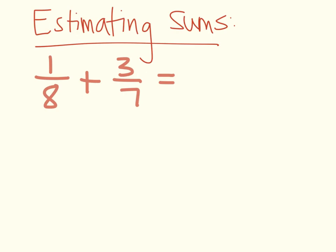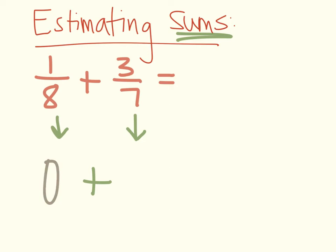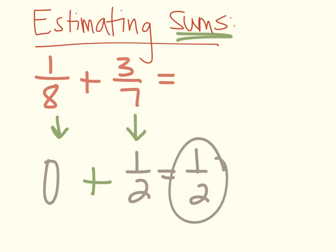Looking at estimating sums — remember, sum is the answer to an addition problem. We estimate each fraction first and then add them together. So 1 eighth would be closer to 0, 3 sevenths would be closer to 1 half, and when we add them together our estimated sum would be 1 half. We're just using the idea of benchmarks to help us estimate the answer.